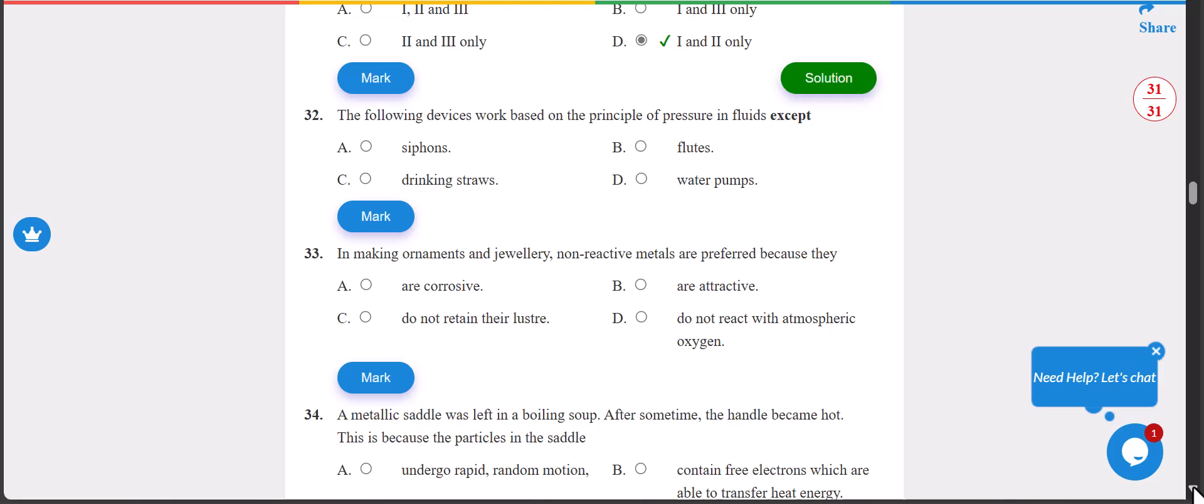Number 32: the following devices work based on the principle of pressure in fluid except what? That says B, that is flutes. 32, this one, correct answer.